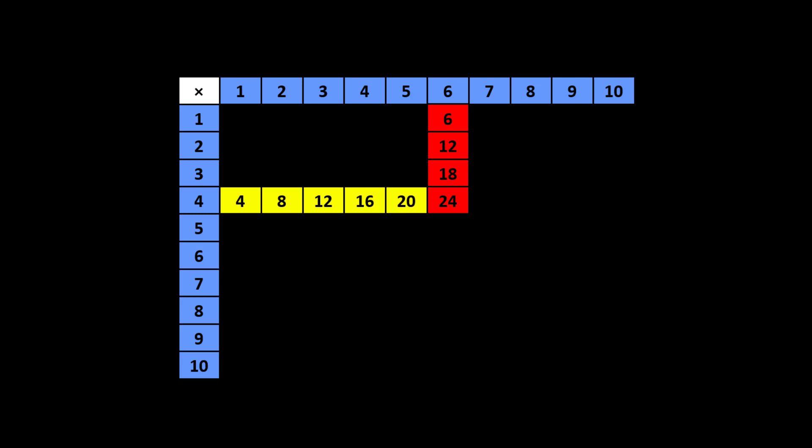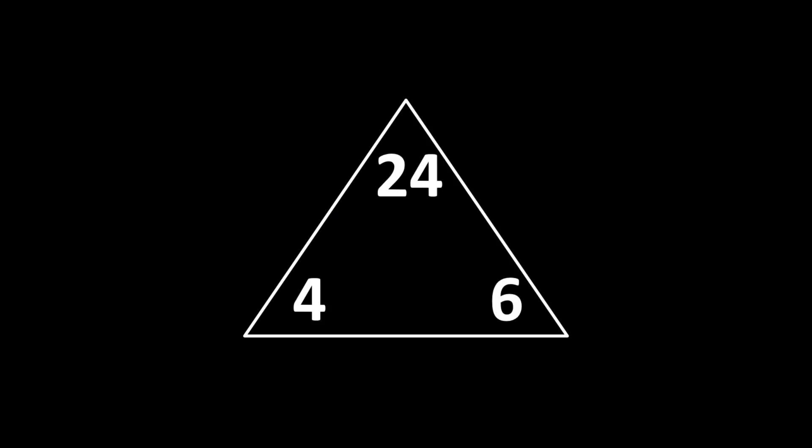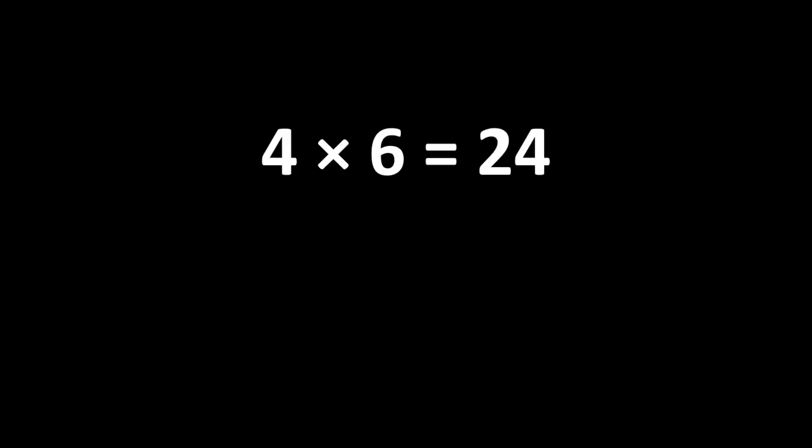Understanding that 24 is a multiple of both 4 and 6 is very important. There are still many more relationships among these numbers. You may notice that 24 is greater than 4, and 24 is also greater than 6. But how many times greater? Here's the answer: 24 is 6 times greater than 4, and 24 is also 4 times greater than 6.